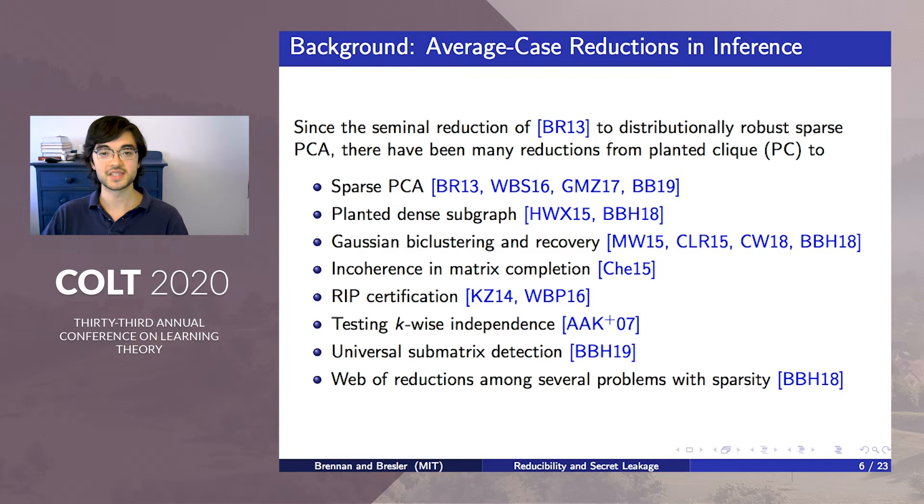The reductions approach has also seen a surge in progress. Since the 2013 COLT paper of Berthet and Rigollet showing lower bounds for sparse PCA from the planted clique conjecture, planted clique, or PC, has been used to deduce lower bounds in a variety of problems. These include planted dense subgraph, bi-clustering submatrix detection, and a number of other problems with sparsity.